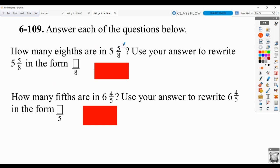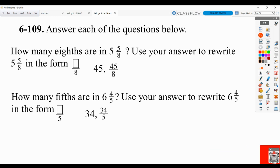How many aces are there in 5 and 5 aces? And then rewrite it. So a number of ways you could do that, but an easy way to do that is change your mixed number to an improper fraction. So 8 times 5 is 40, plus 5 is 45. That means it's 45 aces, which means this missing number is 45. Same thing here. Change it to an improper fraction. You get 34 fifths, which means the missing number is 34.